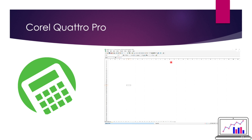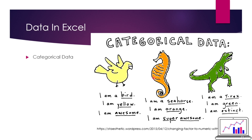Now I'm going to go over the two types of data used in Excel. First, there's categorical data. I found a graph with a bird, a seahorse, and a T-rex. Each underlined item is a piece of data. So we have the animals - bird, seahorse, and T-rex - then colors like yellow, orange, and green, and then descriptors like 'super awesome' and 'extinct' being different category types.